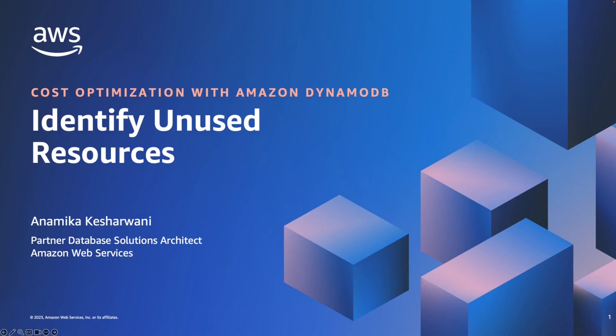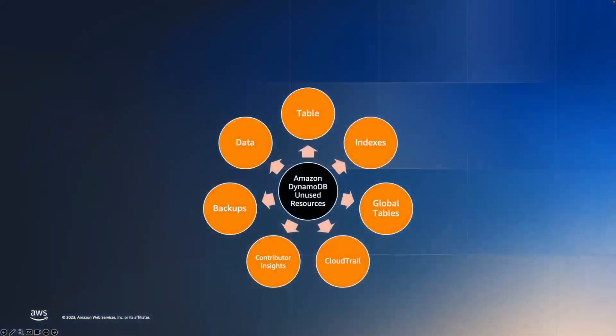Since we are talking about DynamoDB, let's see how we can handle those unused resources to avoid any unnecessary costs. Here on the slide, you can see there are seven areas under which you can focus to reduce the DynamoDB spend. We have table, indexes, global tables, CloudTrail, contributor insights, backups, and data.